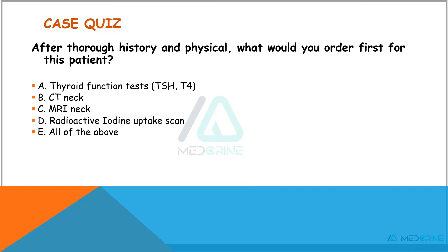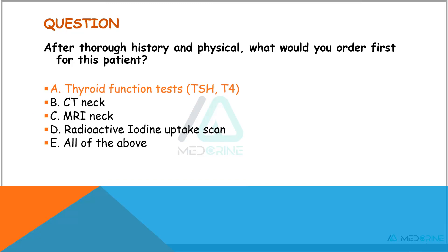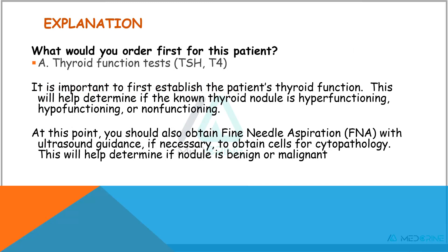Is it a thyroid function test, CT scan of the neck, MRI of the neck, radioactive iodide uptake scan, or all of the above? The correct answer is a thyroid function test. It is important first to establish the patient's thyroid function, and this will help you determine if the known thyroid nodule is hyperfunctioning, hypofunctioning, or non-functioning. At this point you should also obtain a fine needle aspiration with ultrasound guidance to obtain cells for cytopathology studies, which will help you determine if the nodule is either benign or malignant in nature.